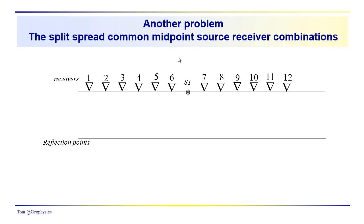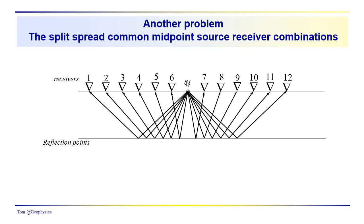Now another problem here is that we've talked about the source-receiver combinations that provide information from a common midpoint. We looked at off-end shot data, and we did it for six receivers and 12 receivers. And we came up with the source-receiver combinations that we would need in order to get receivers that had recorded information from the same midpoint. So here we have a split spread source-receiver combinations. So we have six receivers on one side and six receivers on the other. We're just numbering the receivers by their number from left to right, one through 12.